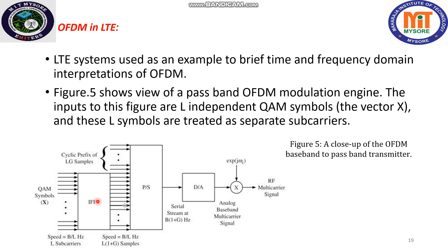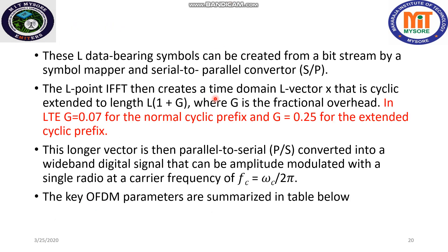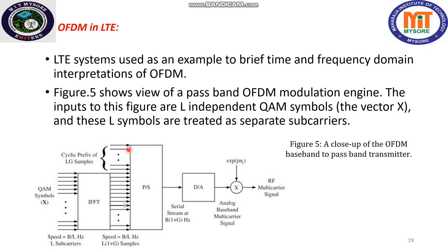Along with the IFFT, some cyclic prefix is added. Here L+G means L is the length of the IFFT sequence or number of sub-carriers, and G is the fractional overhead — G equals 0.07 for normal cyclic prefix and G equals 0.25 for the extended cyclic prefix. The cyclic prefix samples indicate the guard band symbols added. The signal is then applied to a parallel-to-serial converter, and the resulting discrete samples are applied to a digital-to-analog converter, producing a low-pass signal. When multiplied by a single radio carrier — say 2.4 GHz — we get an RF multi-carrier signal.